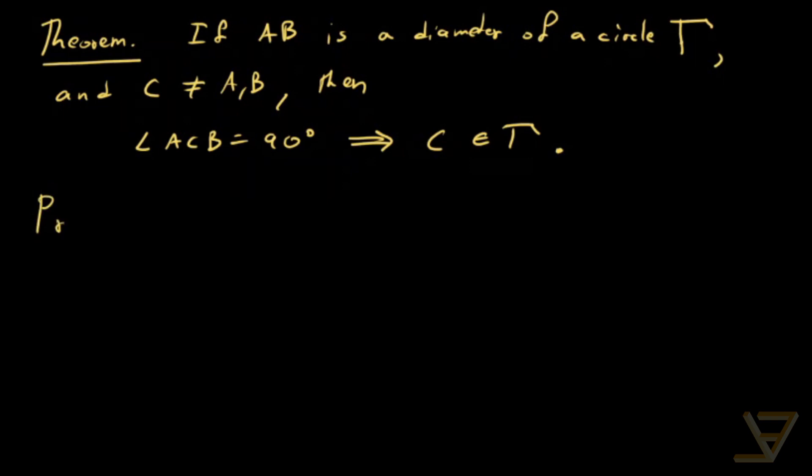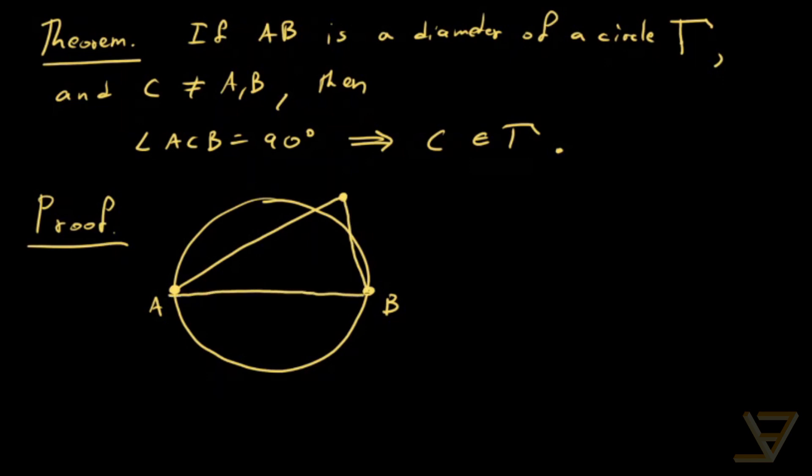So let's prove it. Let me draw a diagram so that's easier to visualize. So let's say A is here and B is here. And let's just suppose that C is out here, so it's not on the circle. It's going to end up being on the circle, but for now we're going to draw it as if it's a general point on the plane that's not equal to A or B.